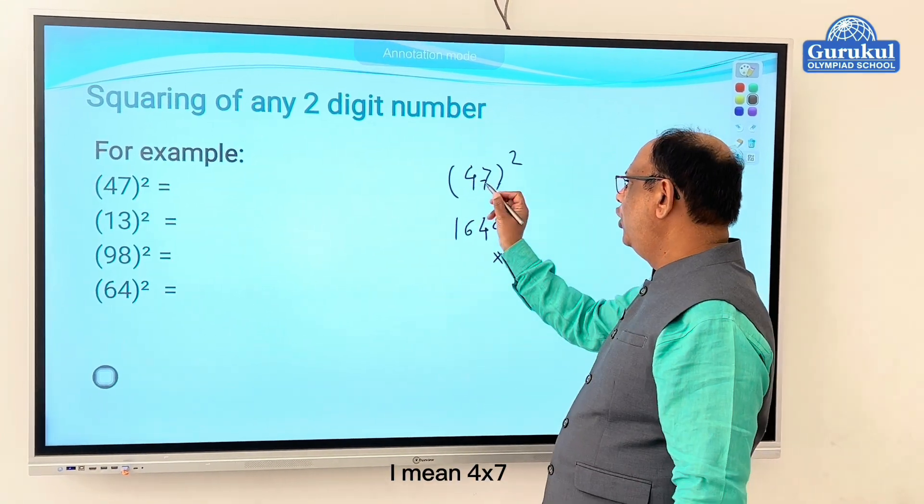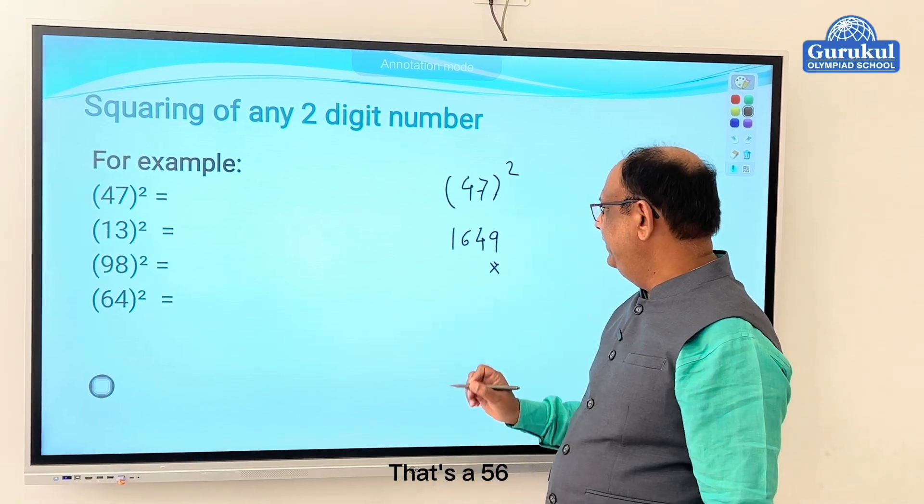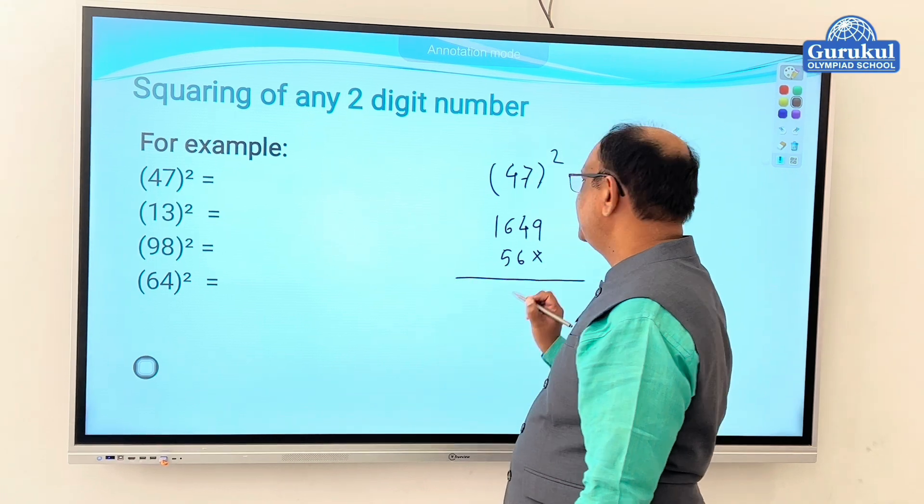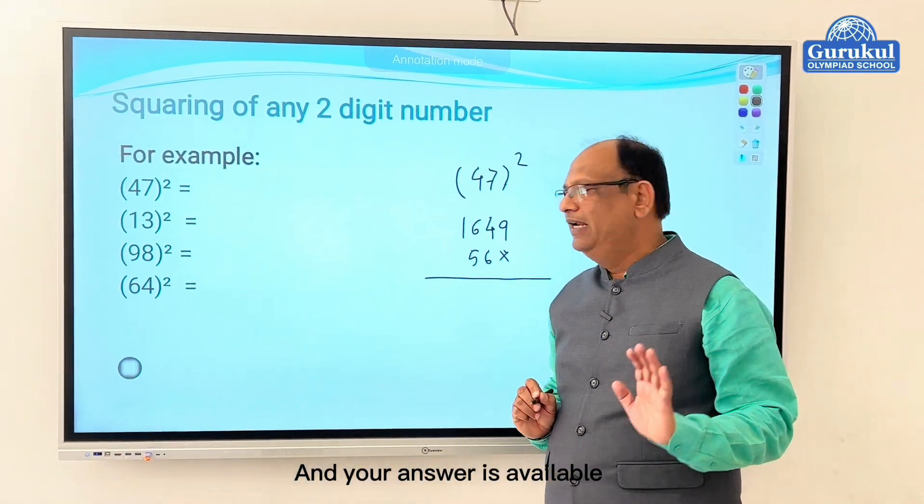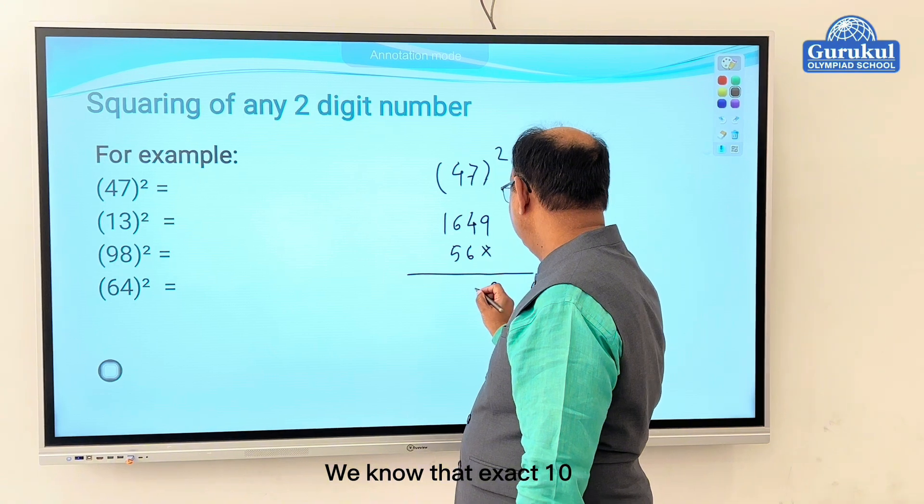Now just shift one digit, put a cross here. And whatever is available here, you have to take their product. The product, I mean four into seven, we know that's twenty-eight, times two, that's fifty-six. So write fifty-six here. And do conventional addition.